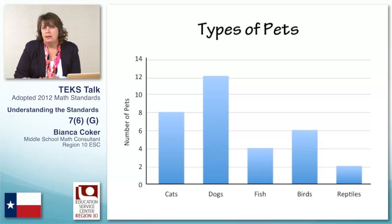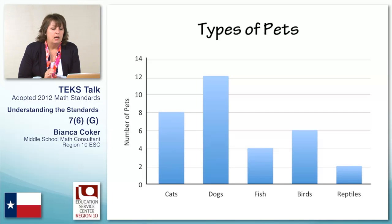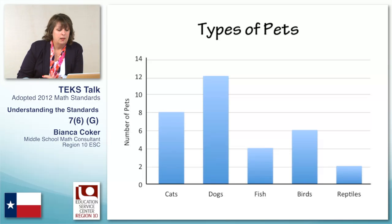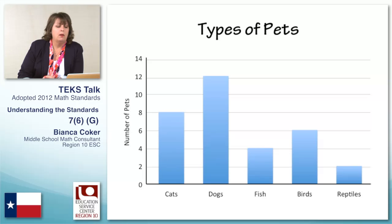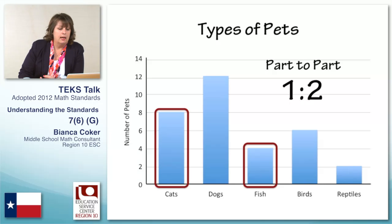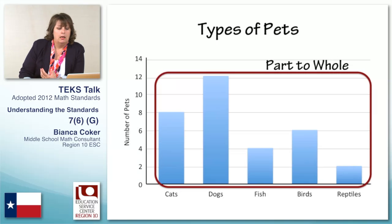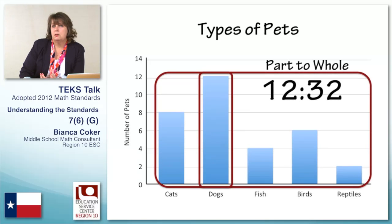Even if we didn't know what the raw data was, we can pull that information out of the graph — and that's really what we're supposed to have our students do. They're supposed to be presented with a graph and then make those comparisons. A part-to-part comparison: there are four students who have fish and eight students who have cats, so fish-to-cats is a one-to-two ratio. For part-to-whole, we add up all the values — the heights of all the bars — and we'll have 32 total. So 12 out of 32 have dogs, four out of 32 have fish, or six out of 32 are birds — that's our part-to-whole comparison.